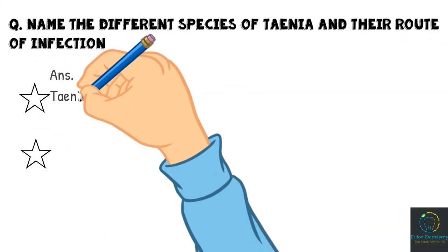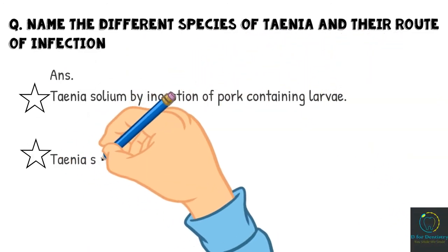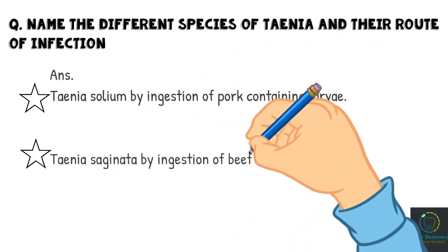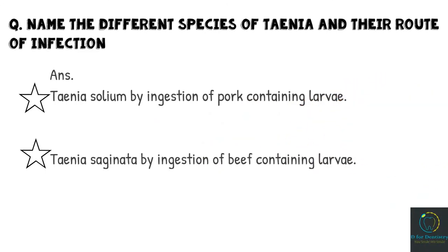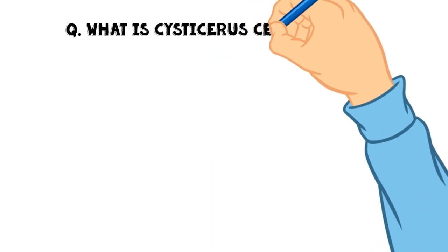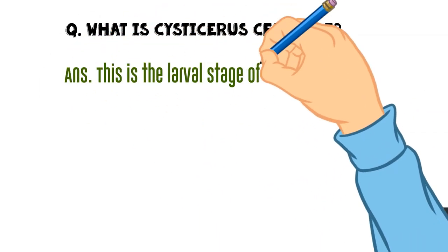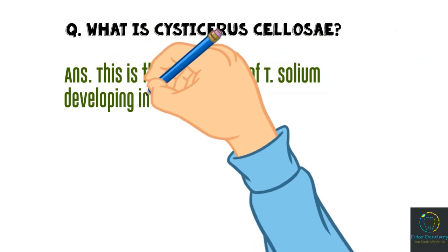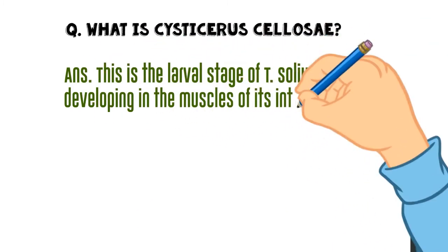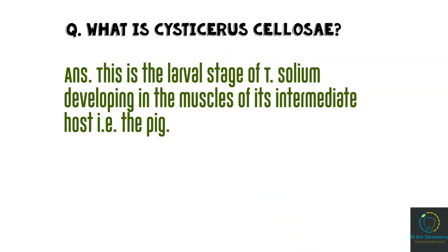Name the different species of Taenia and their route of infection. First: Taenia solium — by ingestion of pork containing larvae. Taenia saginata — by ingestion of beef containing larvae. What is cysticercus cellulosae? This is the larval stage of Taenia solium developing in the muscles of its intermediate host, the pig.